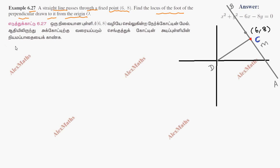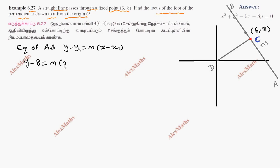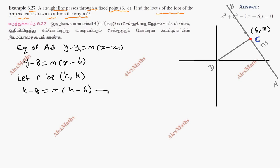The equation of line AB uses the point-slope formula: Y minus Y1 equals M times (X minus X1). Since the line passes through (6, 8), this becomes Y minus 8 equals M times (X minus 6). Let C be a point on this line. This is the first equation.